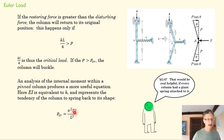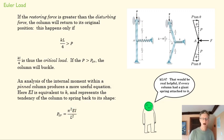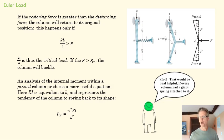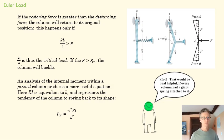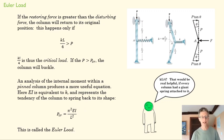You can see that your modulus of elasticity E makes that critical force higher — that makes sense, because if the column is stiff, it's going to be harder to buckle. If its moment of inertia I is bigger — and we'll talk about I more in the next couple of days — if it's got a large cross-sectional area, it's going to be hard to buckle. And if it's long, it's going to be easier to buckle. This equation is called the Euler load — if you reach that Euler load, that column is in danger of buckling.